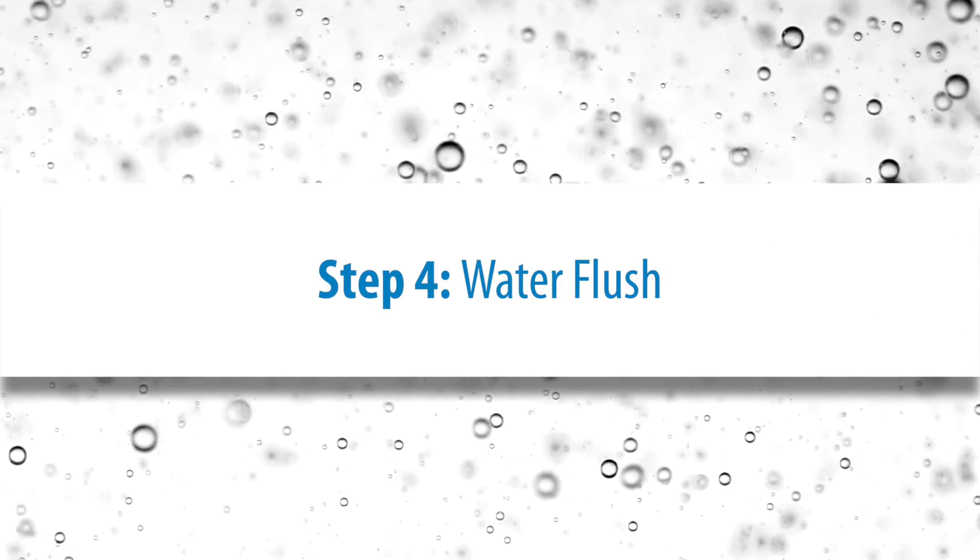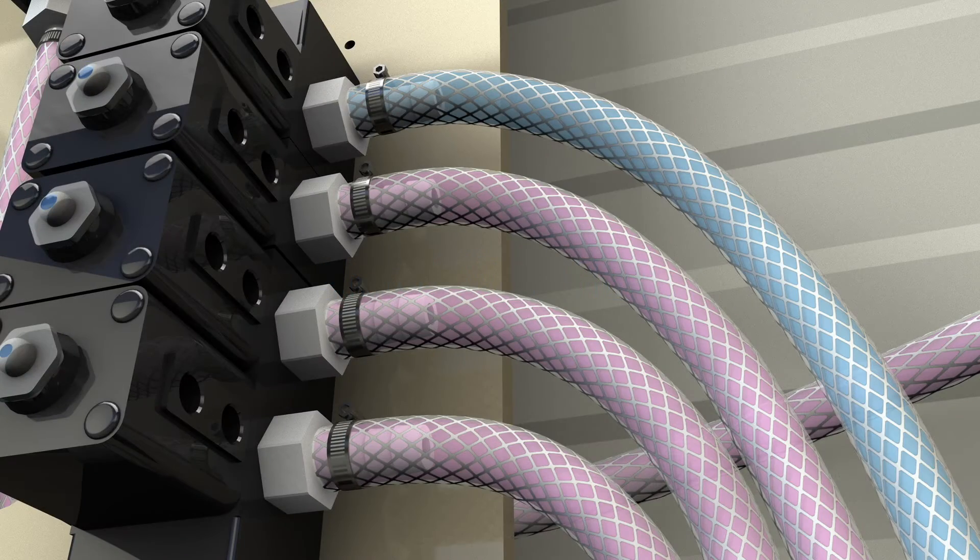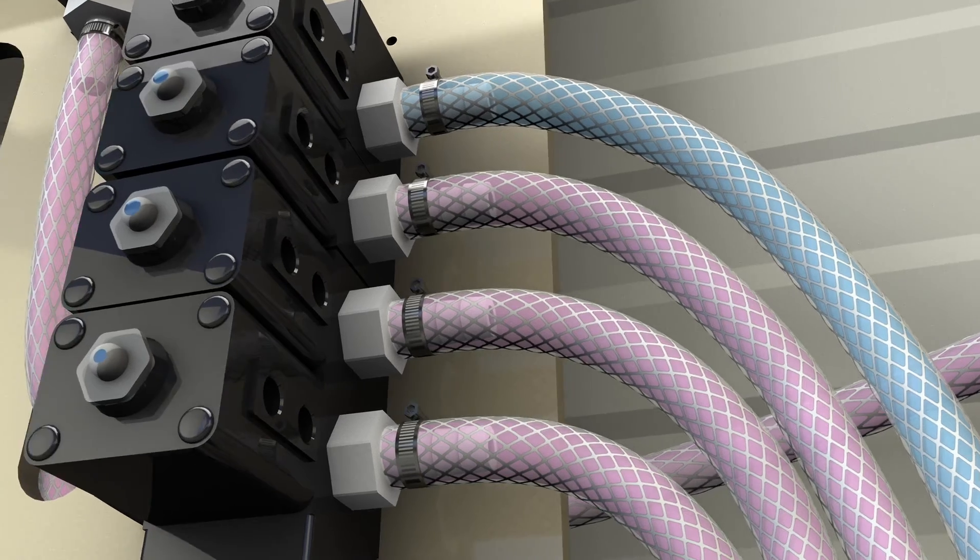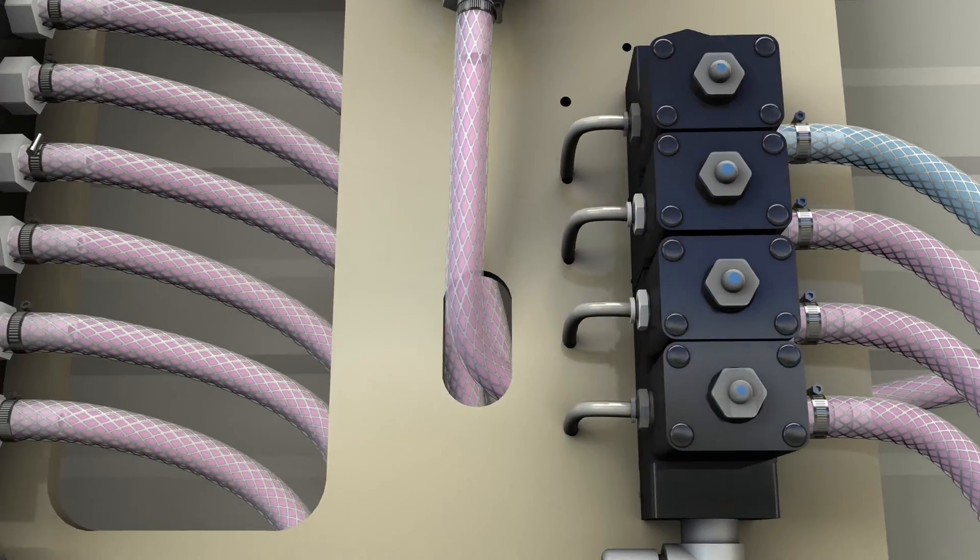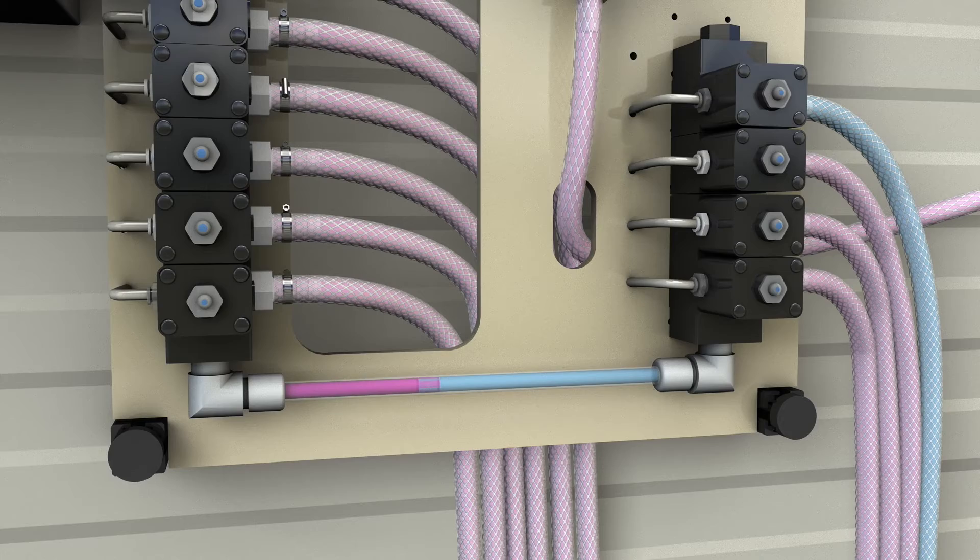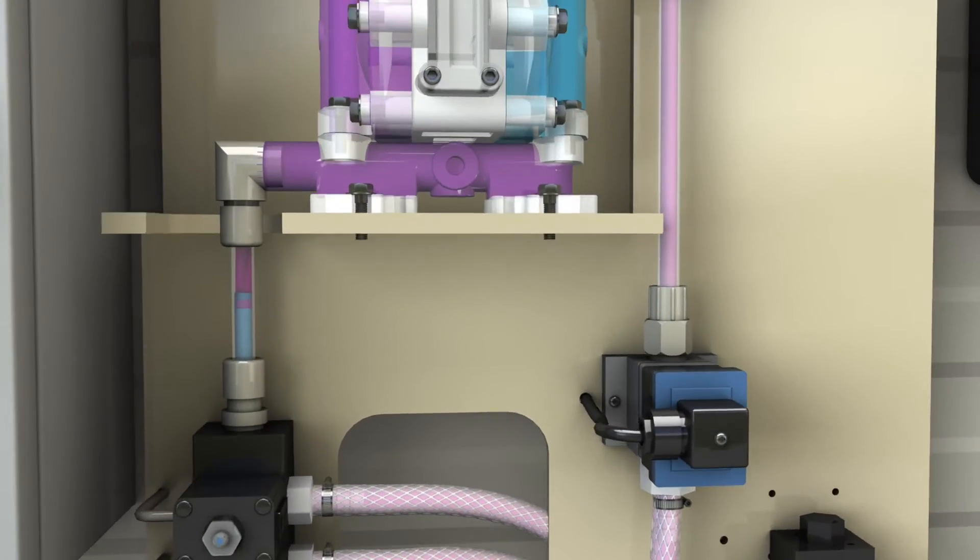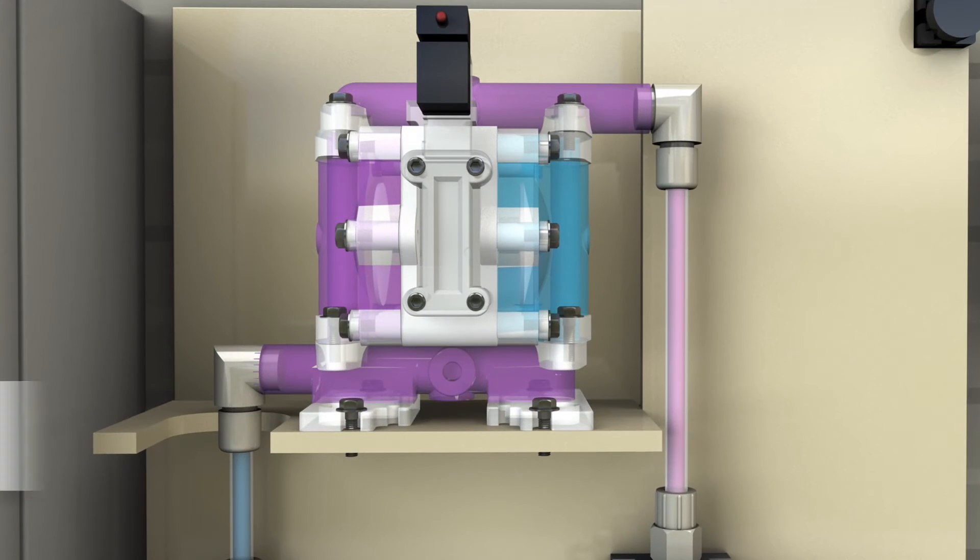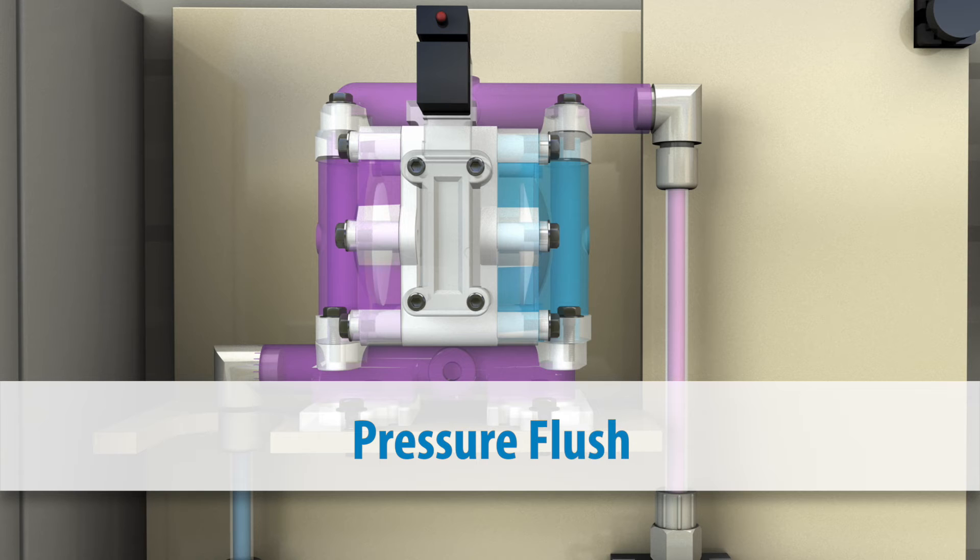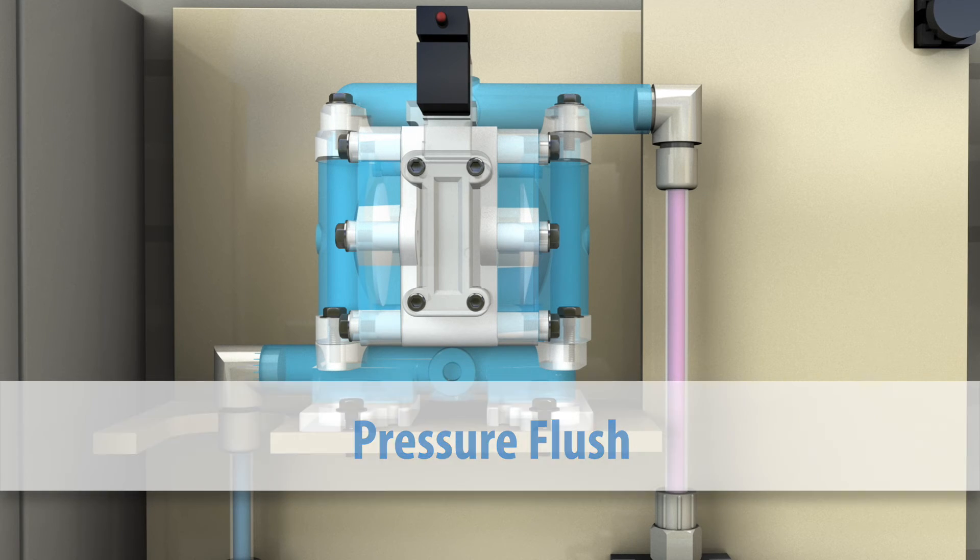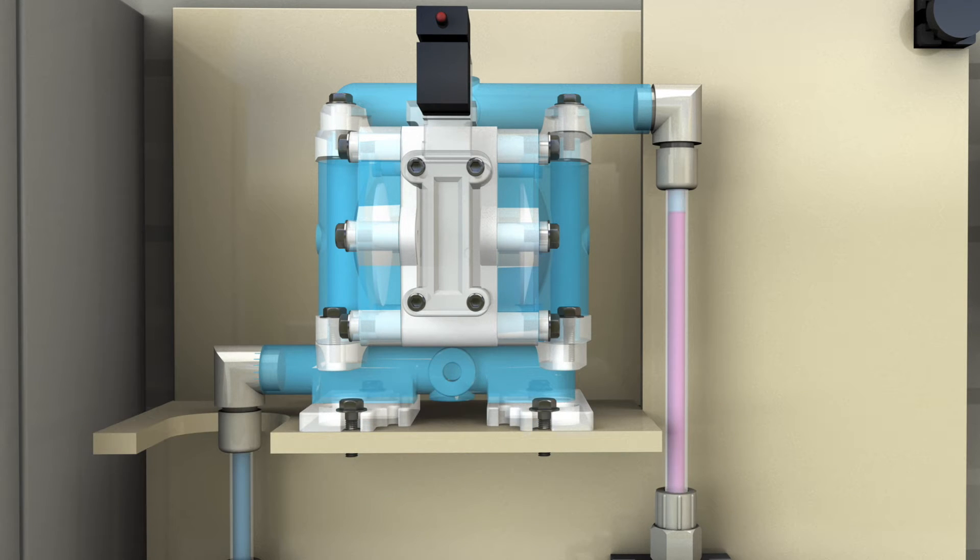Step 4: water flush. The chemical valve is closed at the collector and the water valve is opened. The water flush can be completed in two different ways configurable via the system's setup menu. In a pressure flush, the pressurized water supply flows through one cavity of the pump, flushing the chemical to the washer. Halfway through the flush time, the pump cycles to allow the remaining cavity of the pump to be flushed.